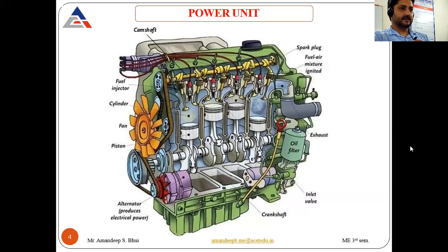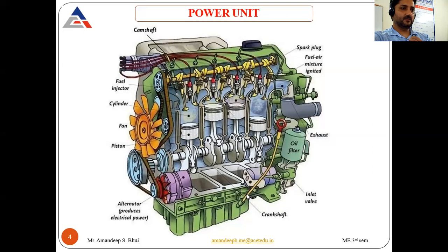This is a cut section of a four-stroke, four-cylinder engine — four cylinders because there are four pistons. At the bottom is the oil pan, which is the reservoir for engine oil. There is also a dipstick — a yellow stick that you can pull out to check both the level and quality of the engine oil, with markings for low and maximum levels.